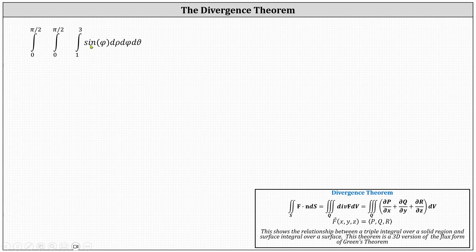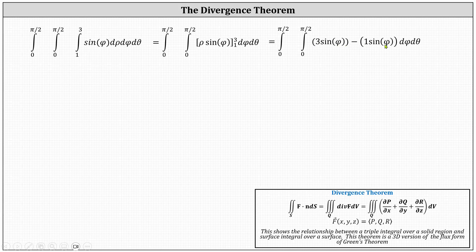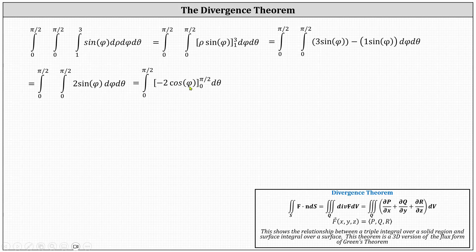We first integrate sine phi with respect to rho. The antiderivative is rho sine phi. Evaluating from one to three gives three sine phi minus one sine phi, which simplifies to two sine phi. Now we integrate two sine phi with respect to phi. The antiderivative is negative two cosine phi. Evaluating from zero to pi divided by two: cosine of pi over two is zero, and cosine of zero is one, giving us zero minus negative two, which simplifies to two.